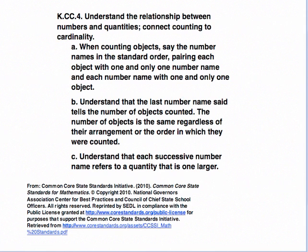Part A states: When counting objects, say the number names in the standard order, pairing each object with one and only one number name, and each number name with one and only one object. Part B states: Understand that the last number name said tells the number of objects counted. The number of objects is the same regardless of their arrangement or the order in which they were counted. Part C states: Understand that each successive number name refers to a quantity that is one larger.